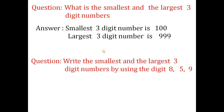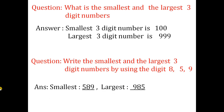Next: write the smallest and largest three-digit numbers using the digits 8, 5, and 9. Using these three different digits, the smallest three-digit number will be 589 and the largest three-digit number will be 985.